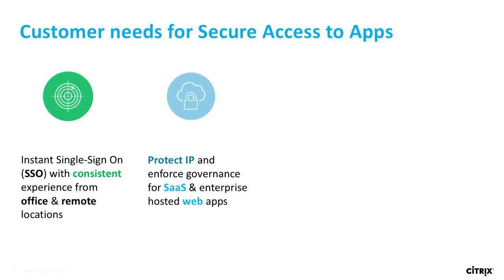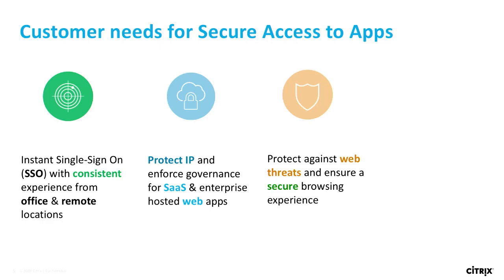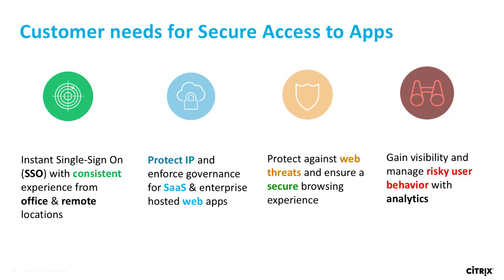The second thing is when you're dealing with SaaS applications, web applications, or different kinds of applications that your employees may be using for work, protecting IP and providing governance around how those applications are consumed is a key use case. The third is there may be web threats — all kinds of data and links within even sanctioned applications that are now becoming attack vectors. And the fourth is being able to gain visibility and insights to manage user behavior and drive closed-loop control within the solution.